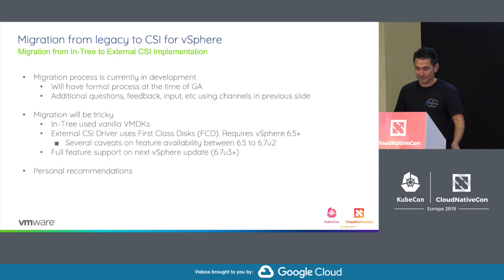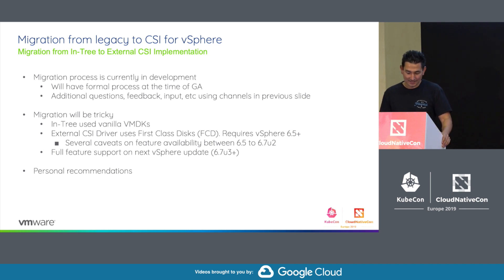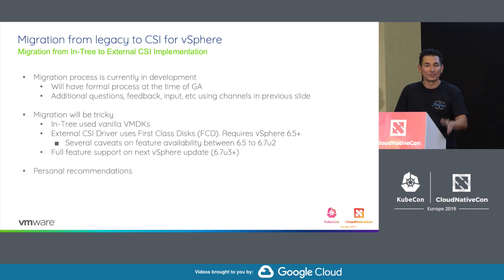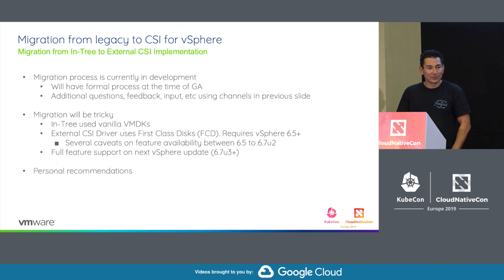Regarding migration from the legacy in-tree provider to the CSI driver for vSphere: a formal migration process is being worked on and will be available around the GA timeframe in July. The migration will be tricky because the in-tree provider uses plain vanilla VMDKs while the external CSI driver uses first-class disks. The first-class disk feature wasn't introduced until vSphere 6.5, and there are caveats by version — for example, vSAN support for first-class disks came in 6.7U1, and vSAN snapshots aren't available until 6.7U2.